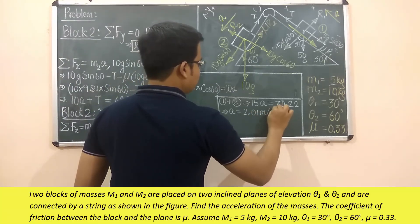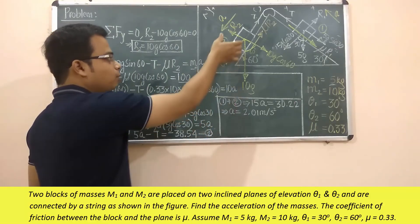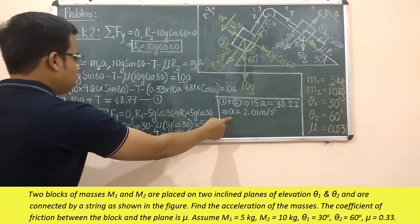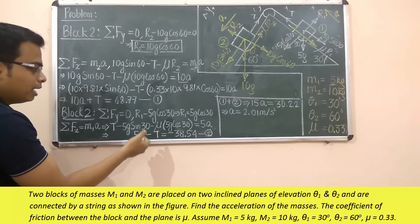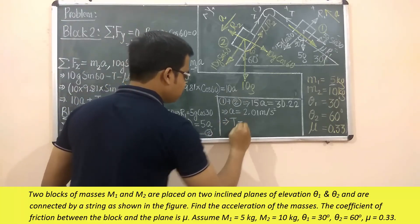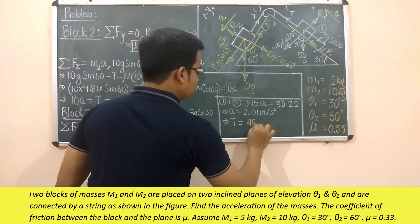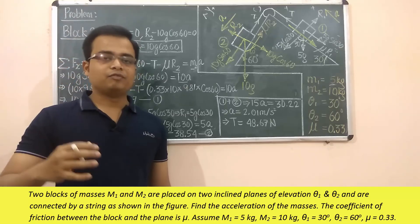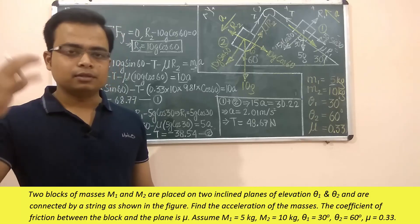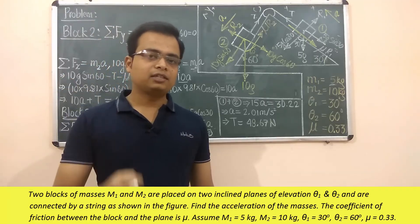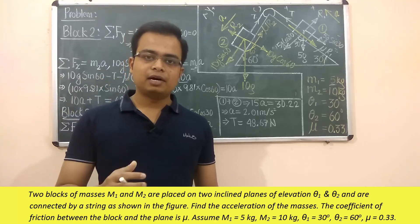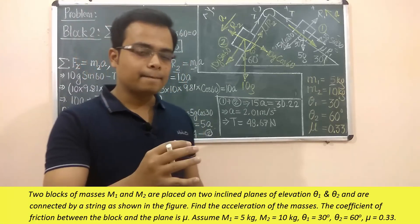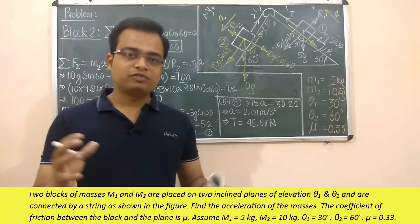So 2.01 m/s² is the acceleration with which block two goes downhill and block one goes uphill. Substituting 'a' back into either equation gives the tension T = 48.67 N. That's it for today. If you have any doubts, write them in the comments below. Share, like, subscribe, and press the bell icon for notifications. This is Manas Patnaik signing off — take care, have a great day, and keep learning.